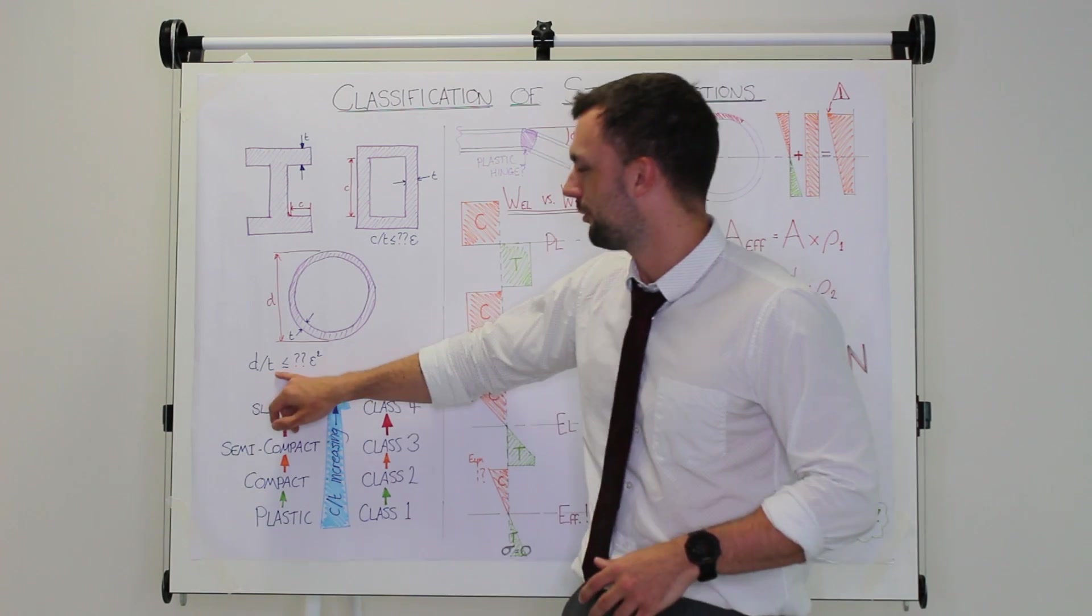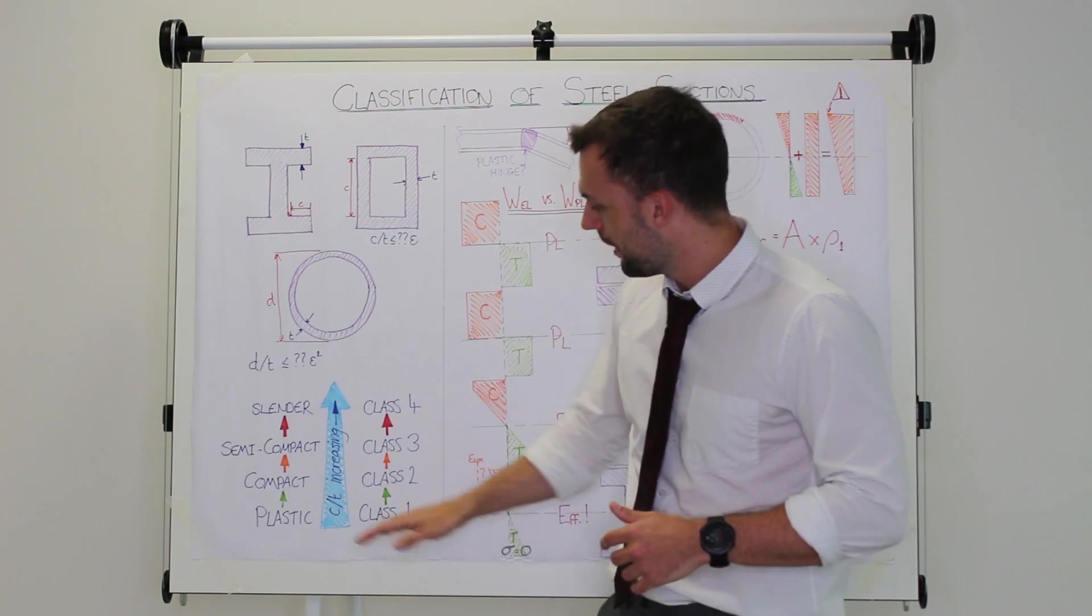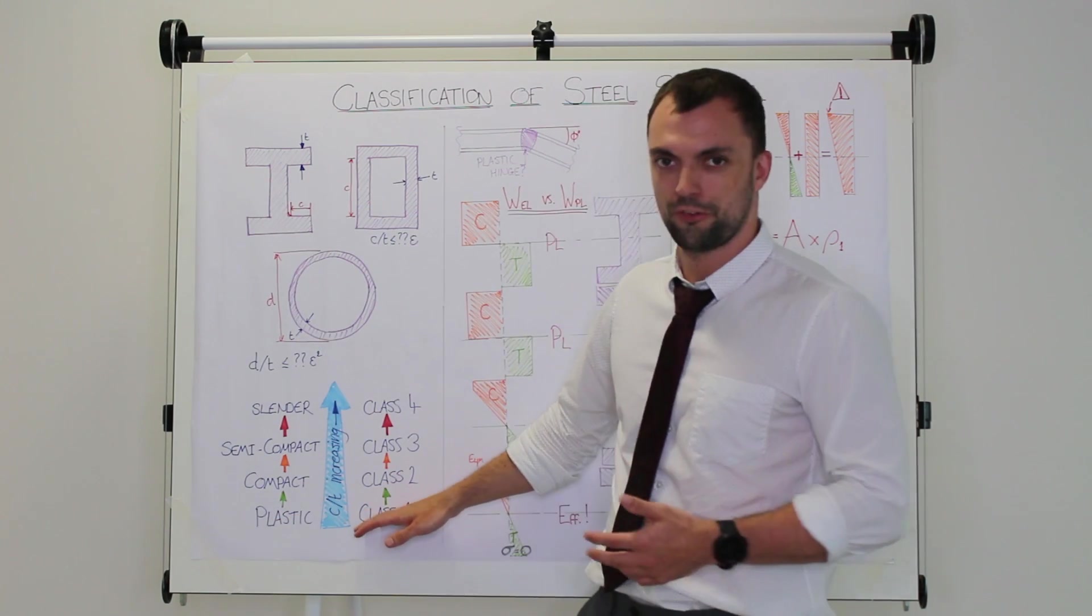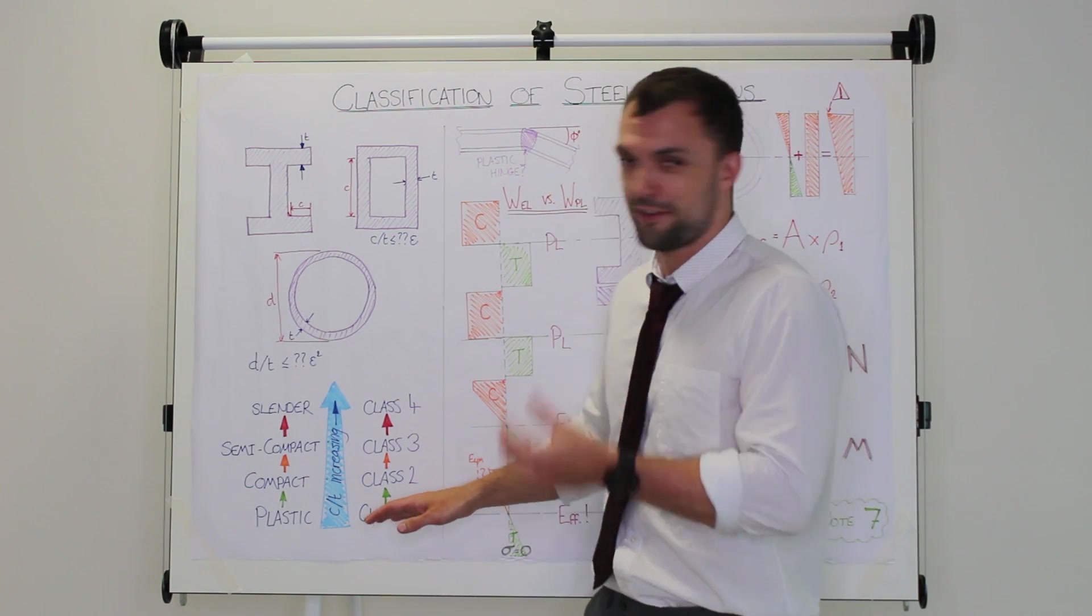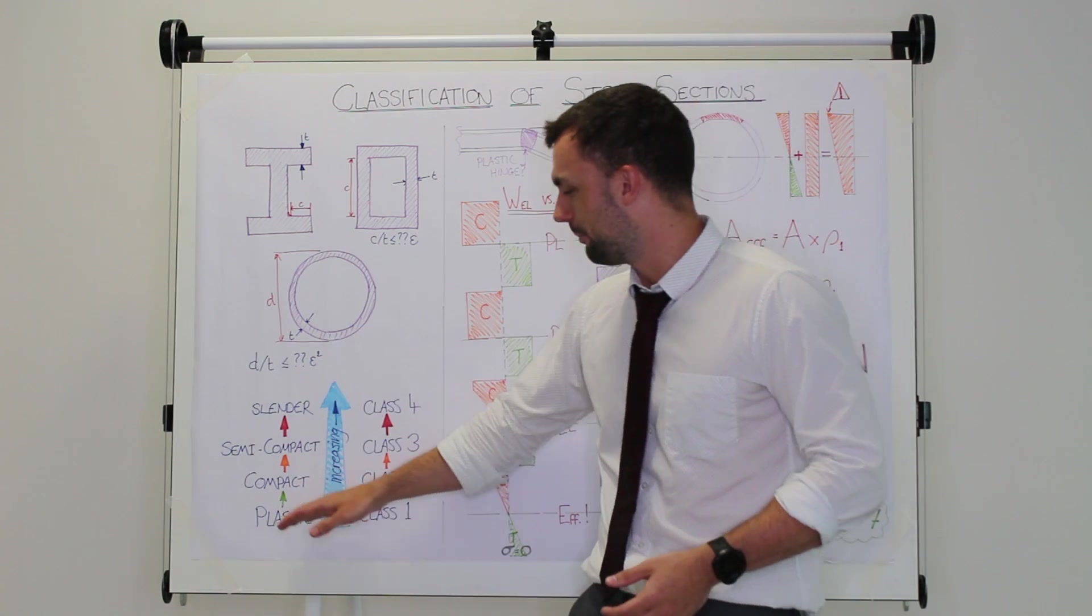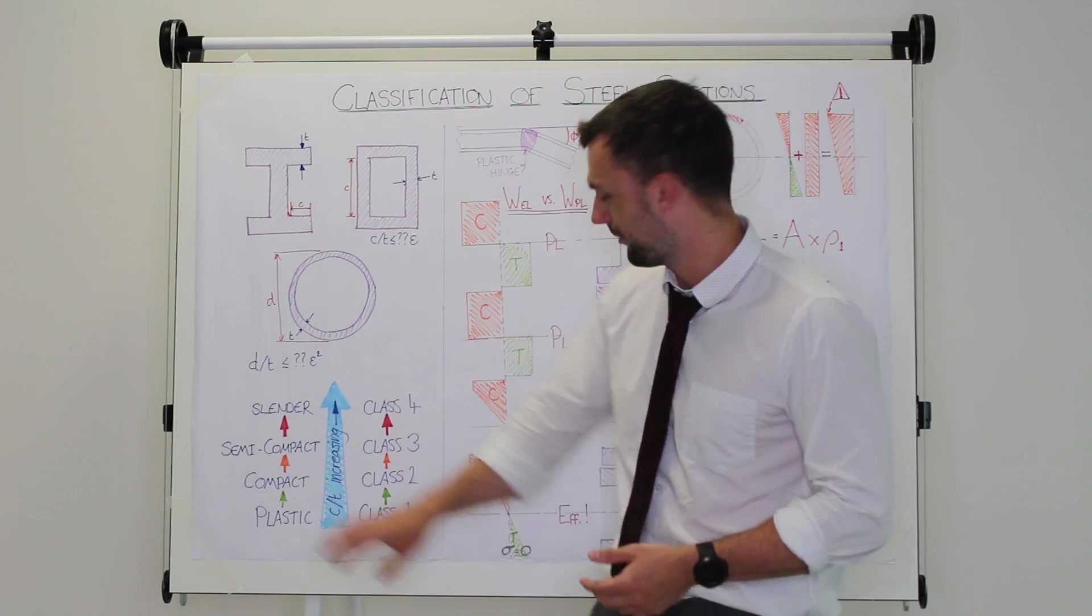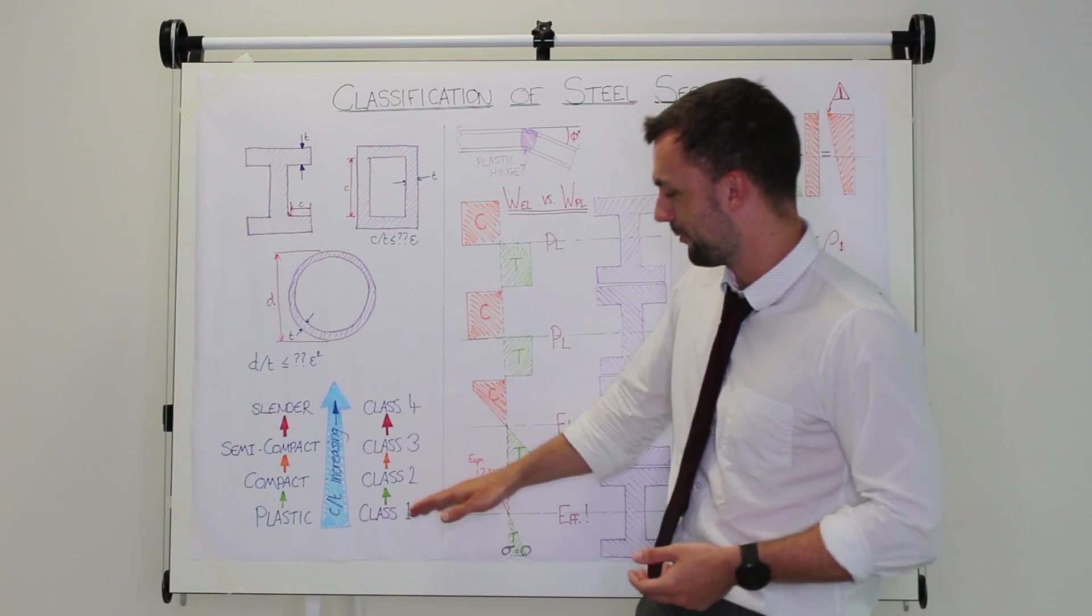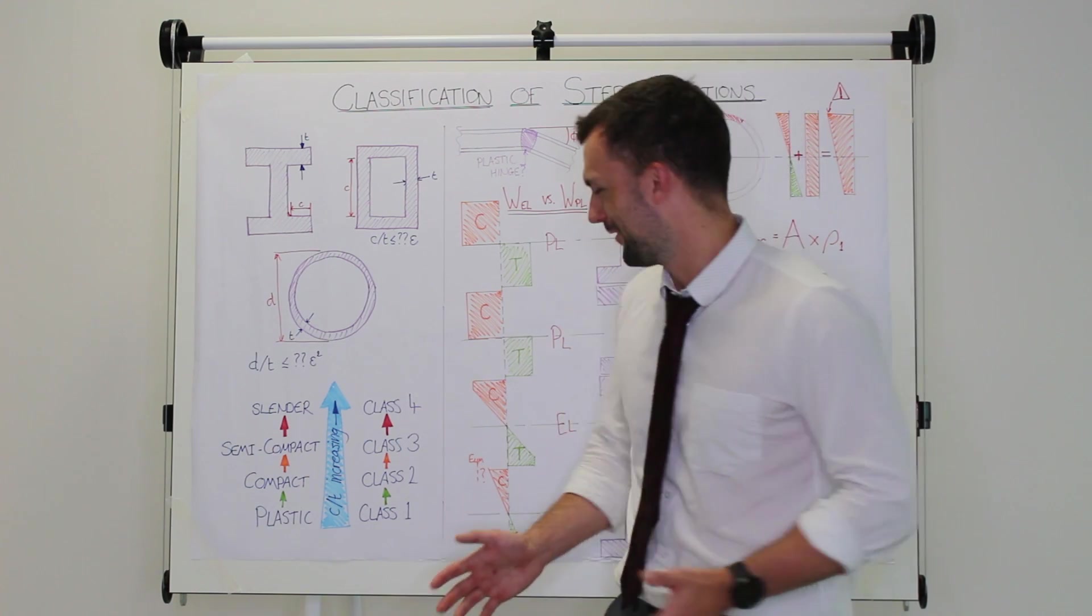If you have a very low ratio of depth over thickness or outstand over thickness, then you're a plastic or a class one section. If you have slightly less thickness or slightly larger diameter, for instance, you'll gradually step up this ladder from plastic to compact to semi-compact to slender in British standard terms, and in Eurocode speak it's class 1, class 2, class 3, and class 4.